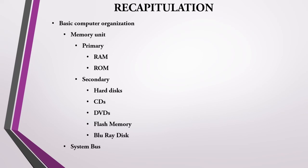Here is a summary of part 2 of chapter 1. In this session we learned about basic computer organization — specifically memory unit and system bus. In memory unit we studied primary memory (RAM and ROM) and secondary memory devices (hard disk, CD, DVD, flash memory, and Blu-ray disk). For system bus, we studied four types: data bus (carries data), control bus (carries control instructions), address bus (carries memory address), and input-output bus (connects external devices).